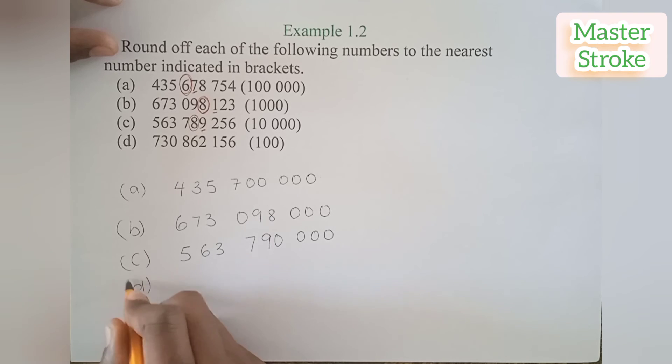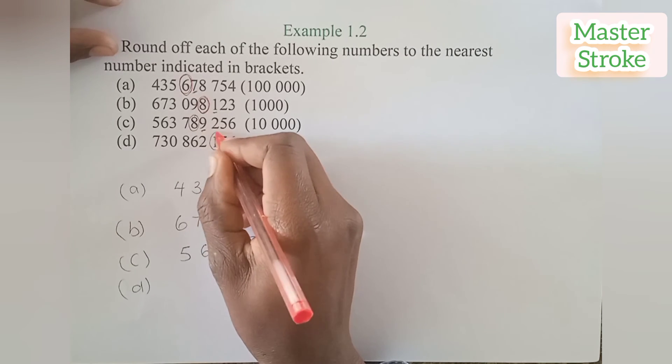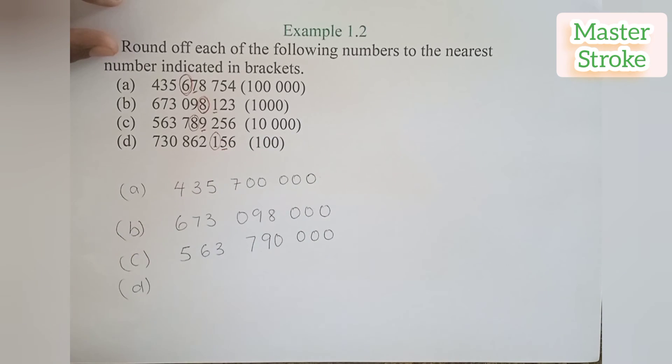For part D we are rounding off to the nearest hundred, so we look at the number at hundred position which is one, the number to the right is five, we round up, so the one becomes two. The number is now seven hundred and thirty million eight hundred sixty two thousand two hundred.